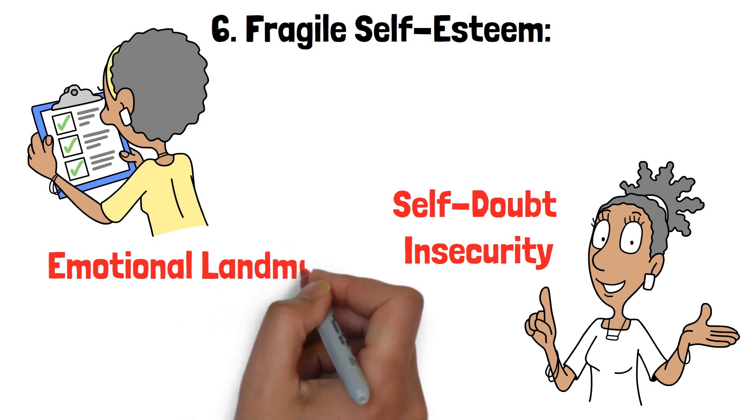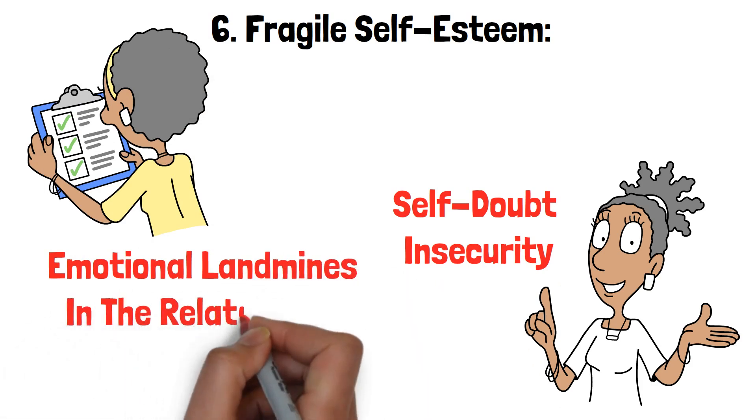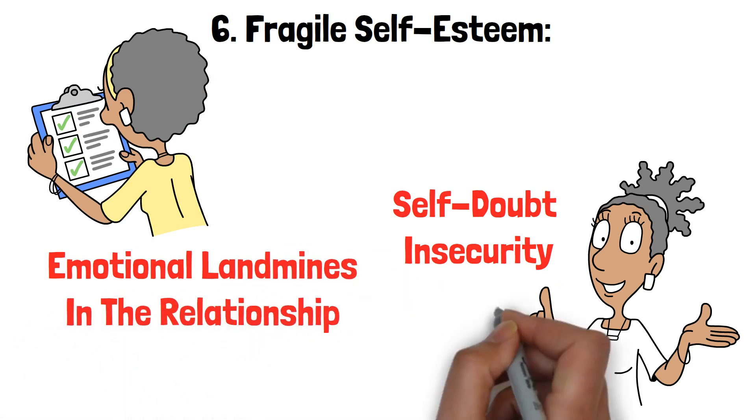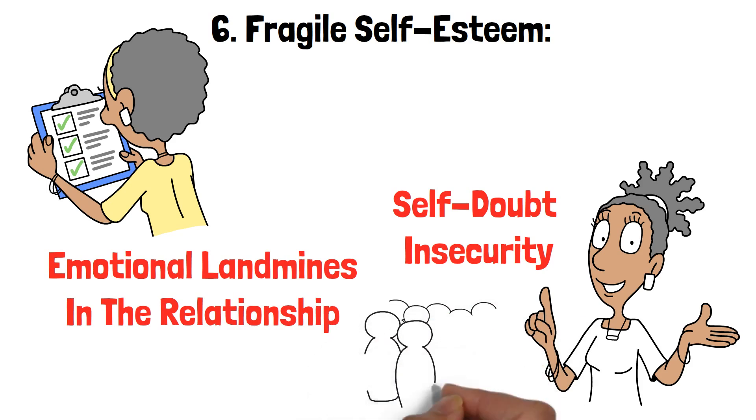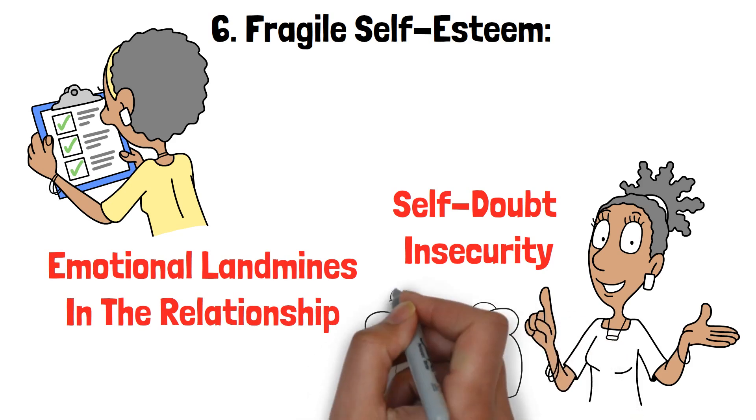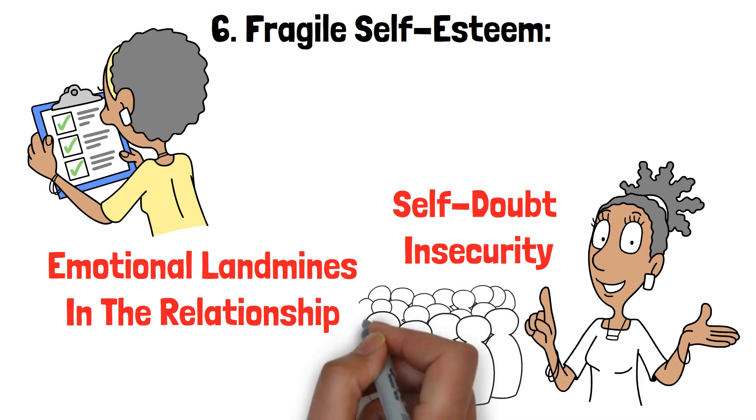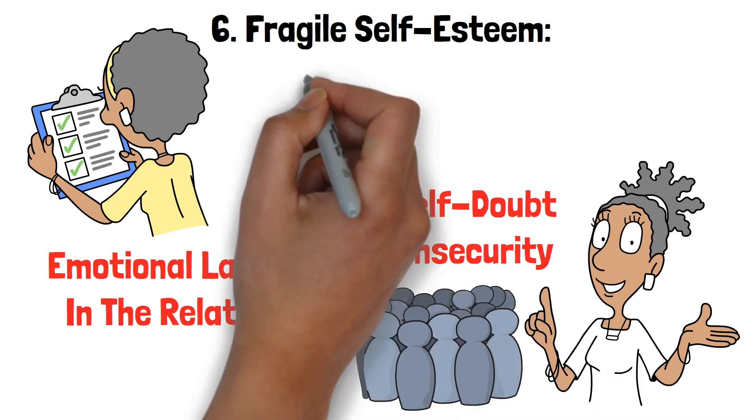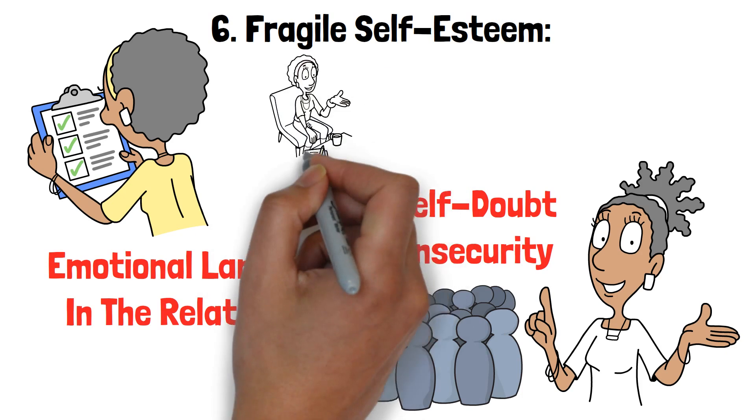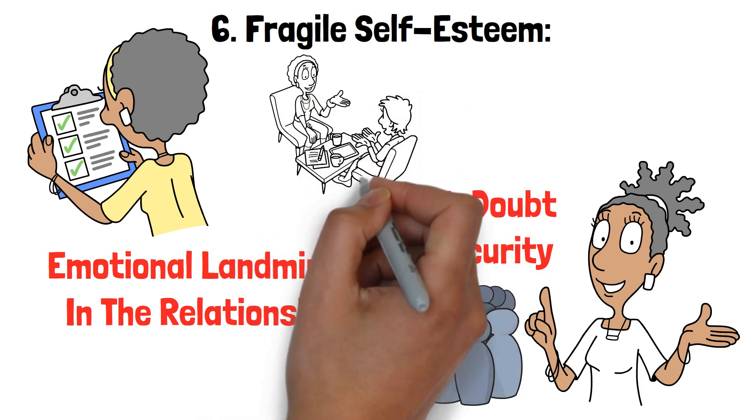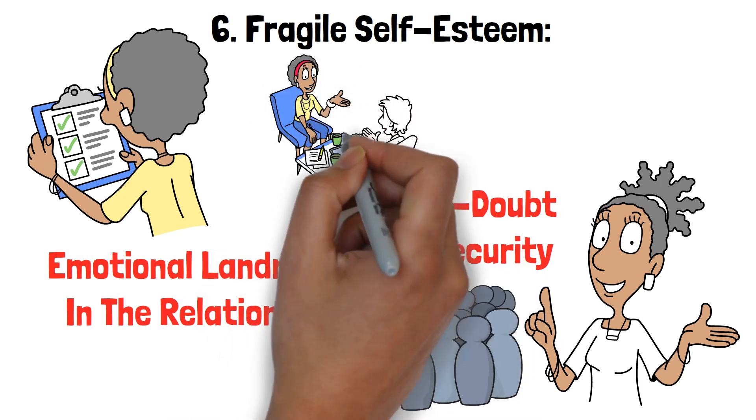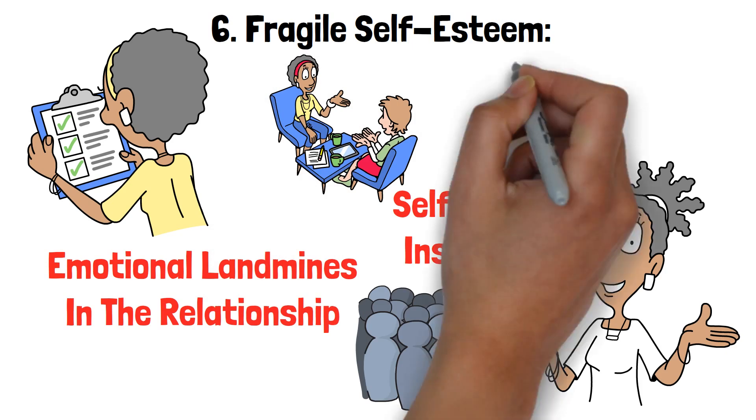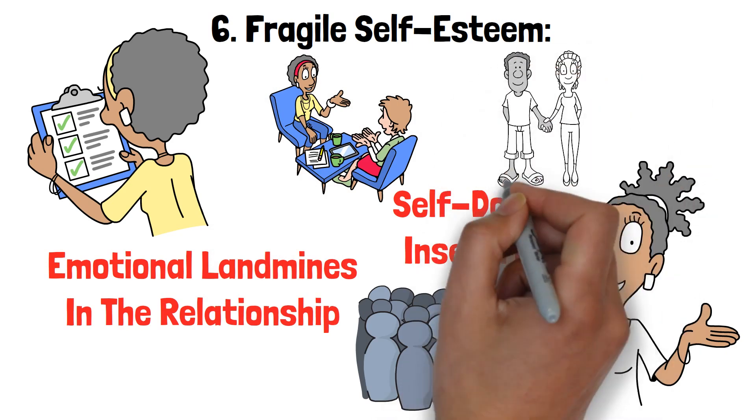It's as if they use their grandiosity as a shield to protect their fragile self-worth. However, this fragility can lead to emotional landmines in the relationship. A simple critique or disagreement, which most couples navigate with relative ease, can escalate into a major emotional event, with your wife's self-esteem hanging in the balance. Understanding this aspect of her emotional makeup is crucial for effectively navigating the ups and downs of a relationship with a narcissistic wife.